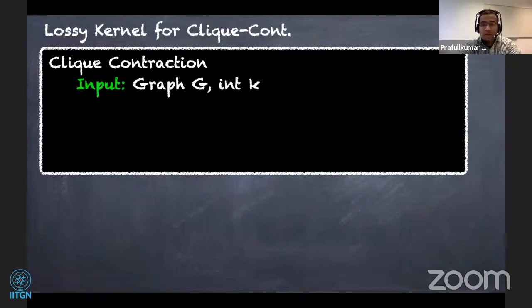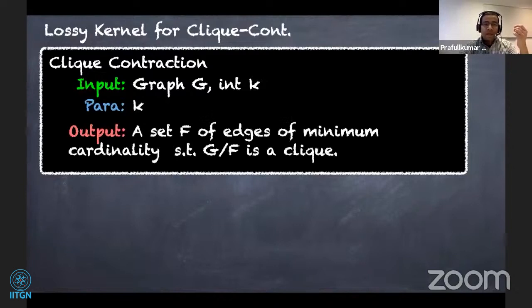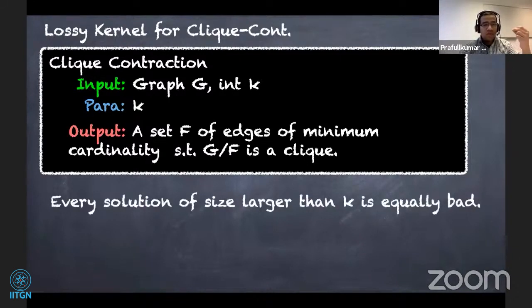Let's look at the lossy kernel for clique contraction. The optimization version: our input is a graph G and an integer k, our parameter is k, and our objective is to output a set F of edges of minimum cardinality such that G contracted by F is a clique. The parameter dictates that any solution larger than k is equally bad — so if we somehow conclude that any solution would be of size strictly greater than k, we can just return any spanning tree.